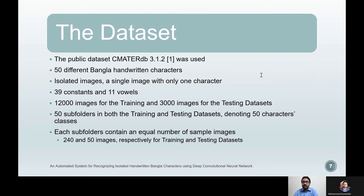Both the training and testing subfolders each contain 240 and 50 sample images respectively. This balancing ensures that the class imbalance problem will not occur during training. Counting all samples, there are 12,000 and 3,000 images respectively for the training and testing datasets.